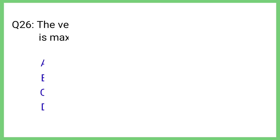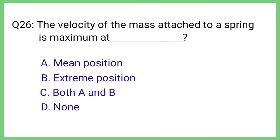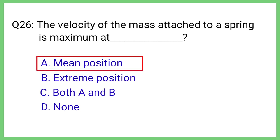Question No. 26. The velocity of the mass attached to a spring is maximum at. The correct answer is Option A. Mean position.